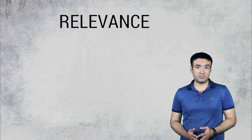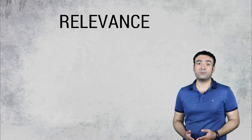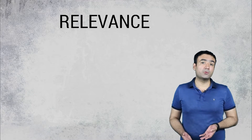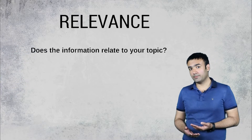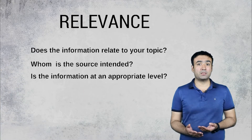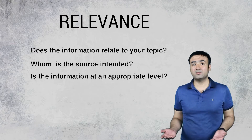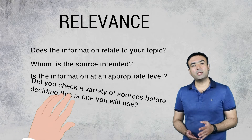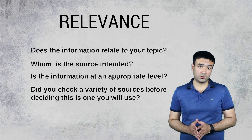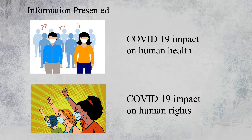The second criterion is relevance. Relevance is the importance of the information for your needs. In order to identify relevance, you should explore the following questions: Does the information relate to your topic? Who is the intended audience? Is the information at an appropriate level — not too elementary or advanced for your needs? Did you check a variety of sources before deciding to use this one? For example, if you are looking for information about the impact of COVID-19 on human health, an article about the impact of COVID-19 on human rights may be interesting, but it will not answer your question.